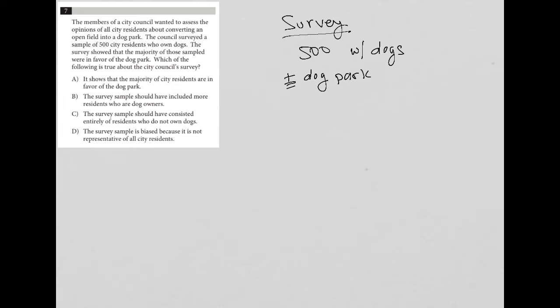Choice A says it shows that the majority of city residents are in favor of the dog park. Well, that's not true, right? Because the survey is only being handed out to residents who have dogs. All 500 people who were surveyed are dog owners. So that doesn't really represent the entire city. It's not representative of all of the city residents. So I don't like A.